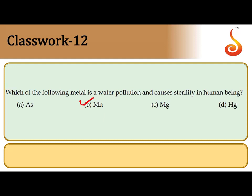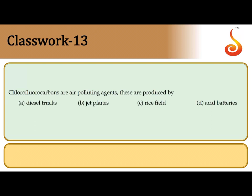The 12th question asks which metal in water pollution causes sterility or infertility in human beings. Manganese is known to cause infertility or sterility in humans — once it enters the food chain and reaches the human body at high concentration, it leads to infertility. The correct answer is option B.